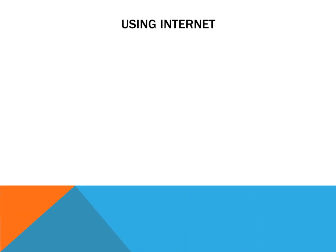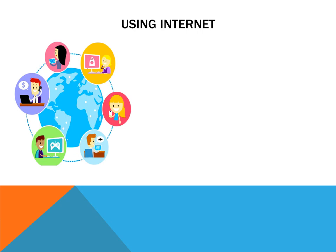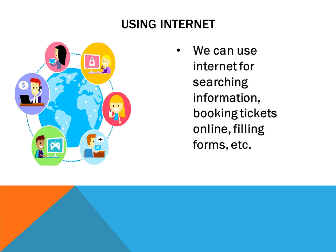Next is using internet. We can also use internet with the help of computer. With the help of internet we can search different kinds of information, we can book tickets online, we can fill different forms, and we can learn many more things with the help of computer.